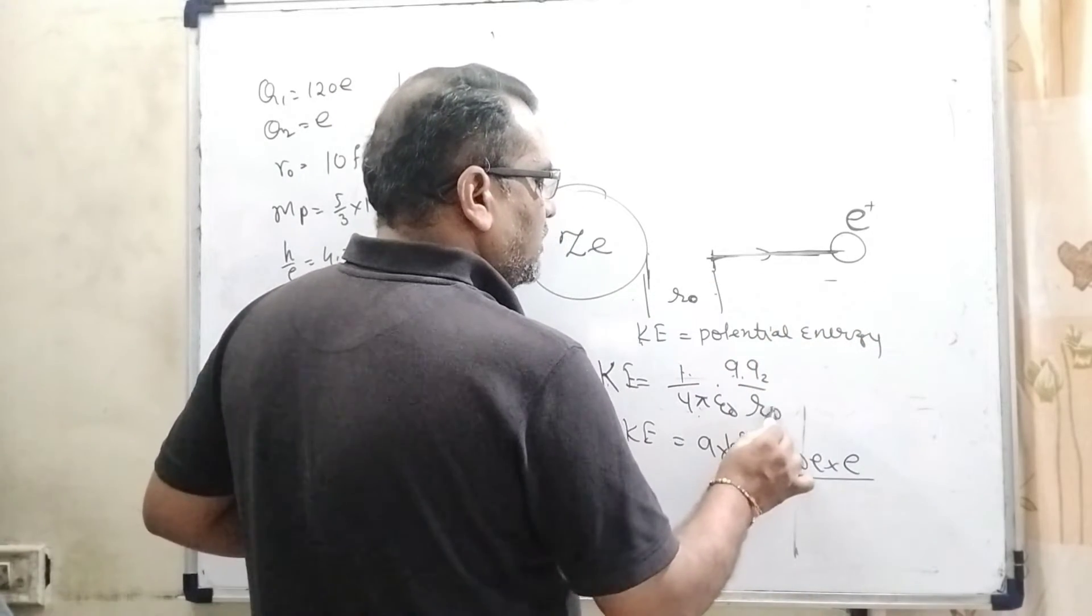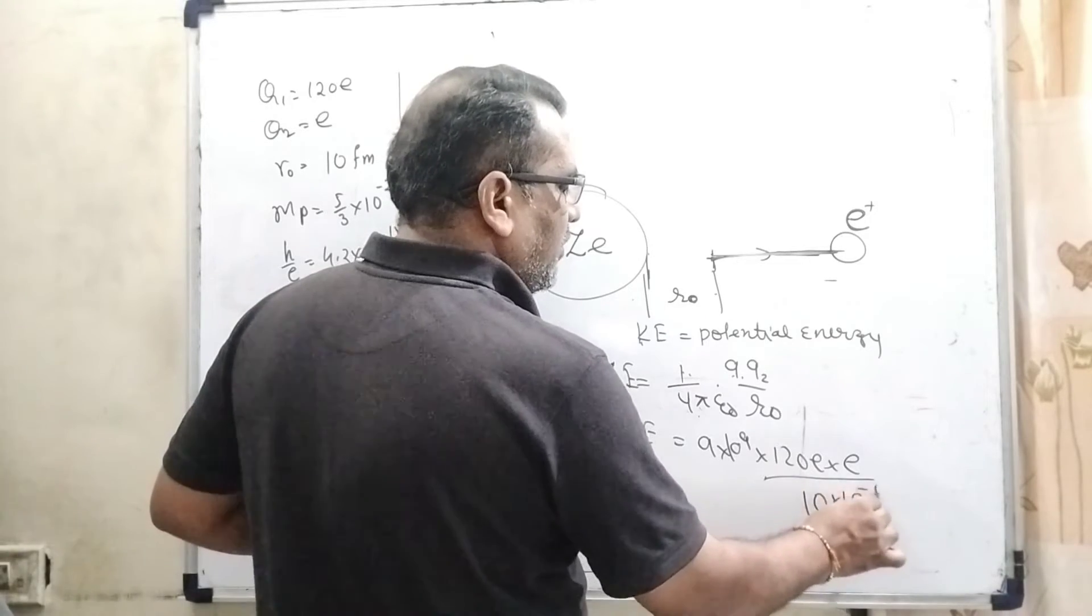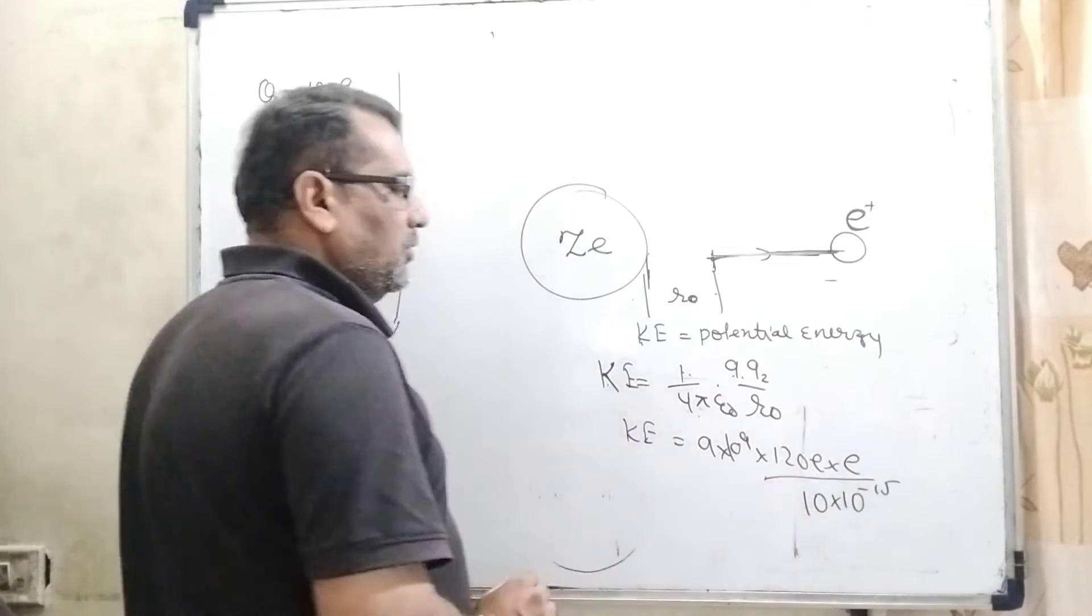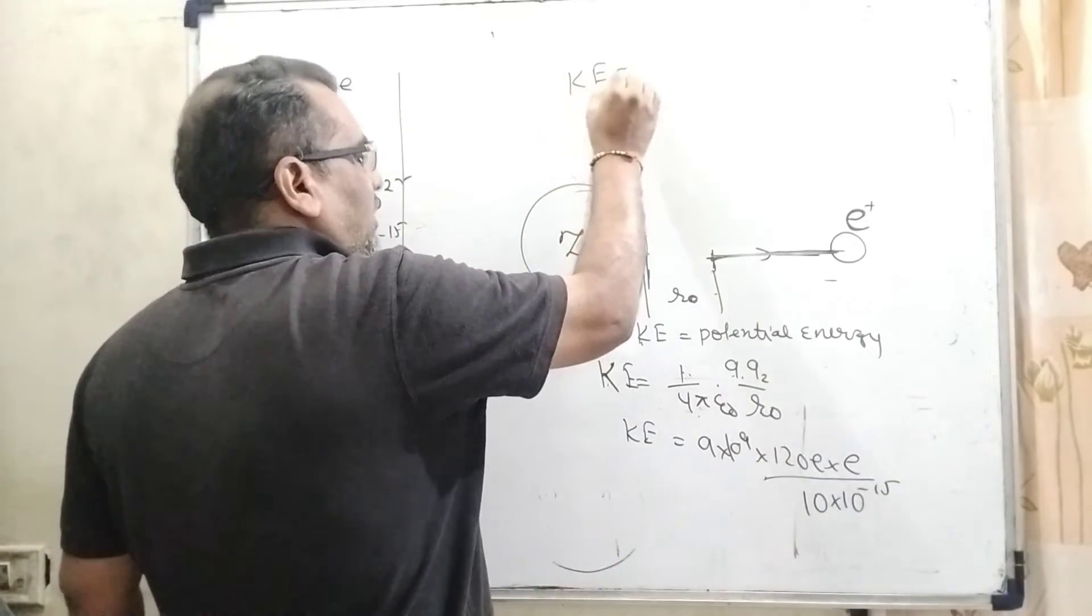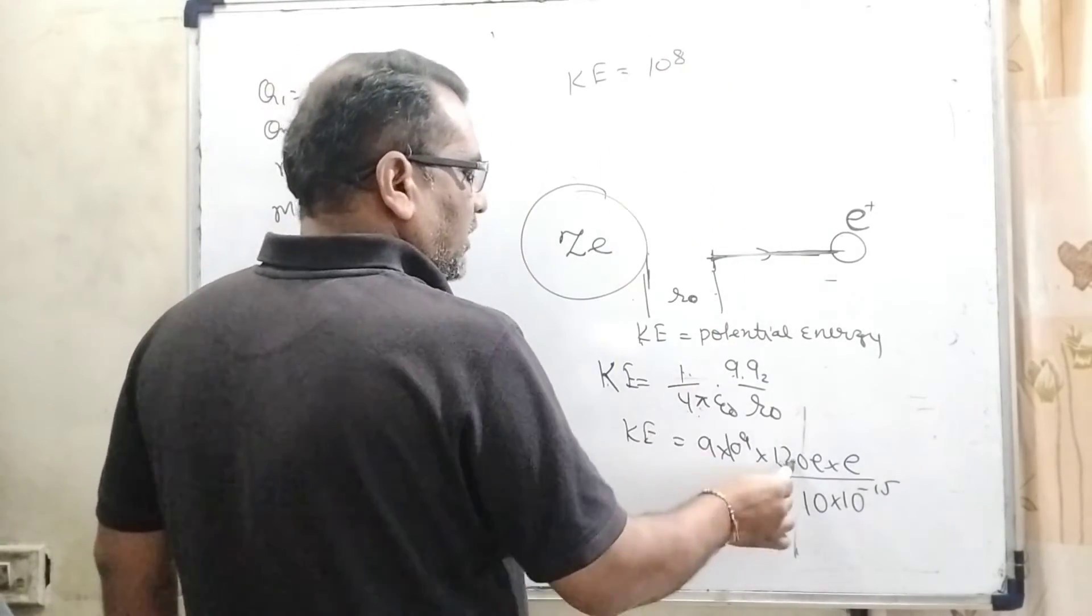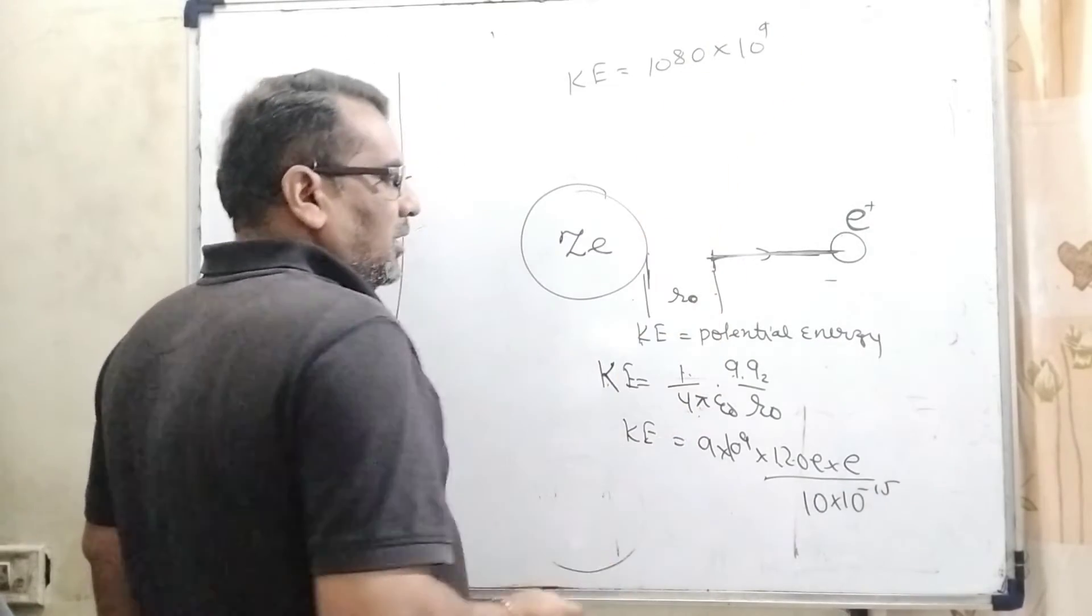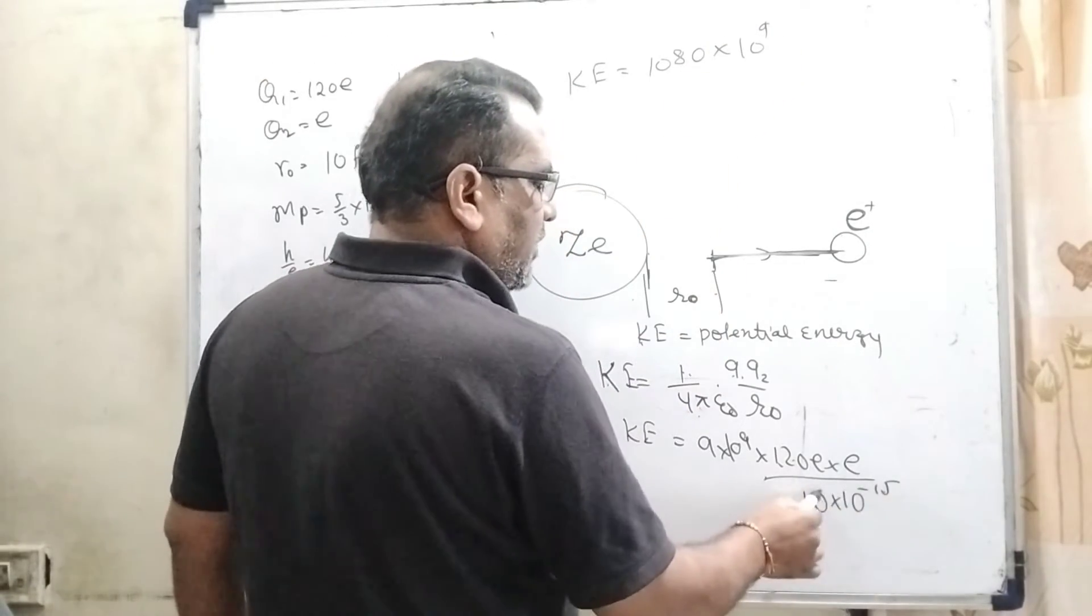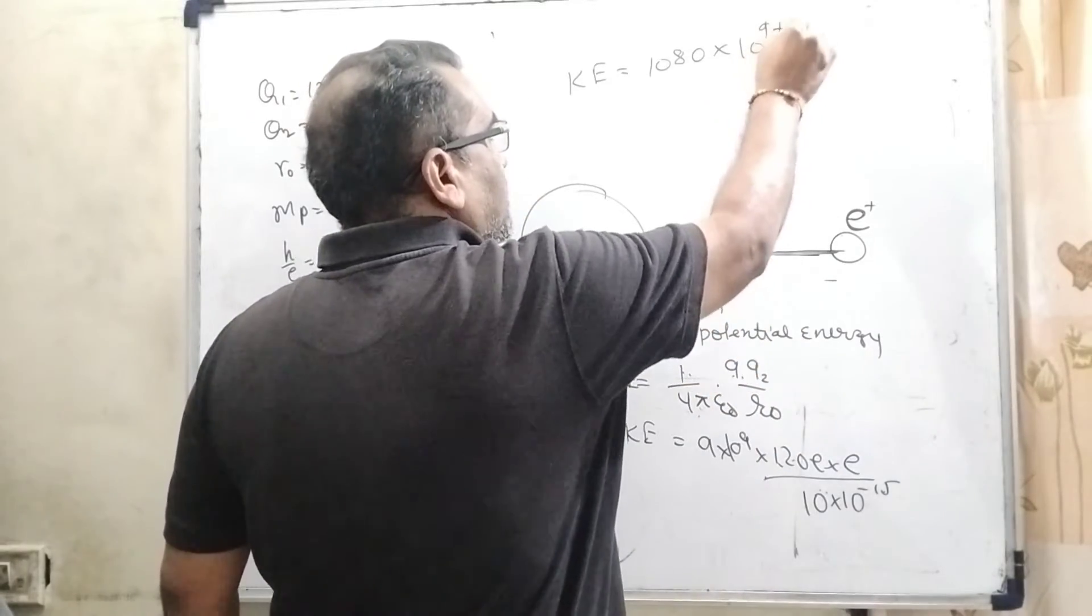What is the closest approach? 10 Fermi, means 10 × 10^-15. So the kinetic energy is 12 × 9 = 108, and 10^9 and 10^-15 plus 1 is 10^-14, which goes to numerator and becomes positive.